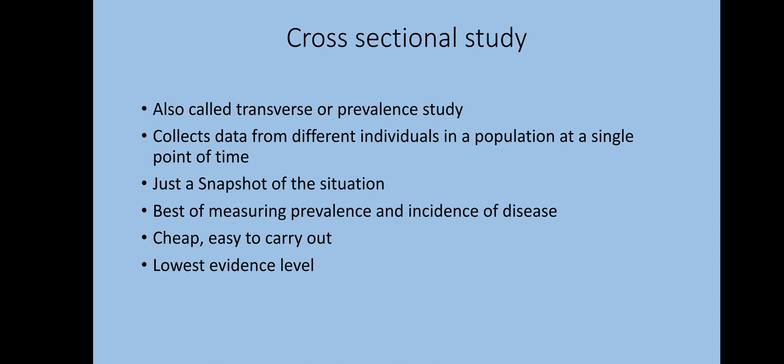In the last episode we learned that in case series studies individuals are tracked down, but in cross-sectional studies they are not tracked — data is collected at a single point of time, so they are just a snapshot of the situation. Cross-sectional studies are best for measuring the prevalence and incidence of disease. The advantage is that they are cheap and easy to carry out, but in terms of evidence they have the lowest level of evidence. For example, 'the prevalence of breast carcinoma among women of ABC city' would be a cross-sectional study.